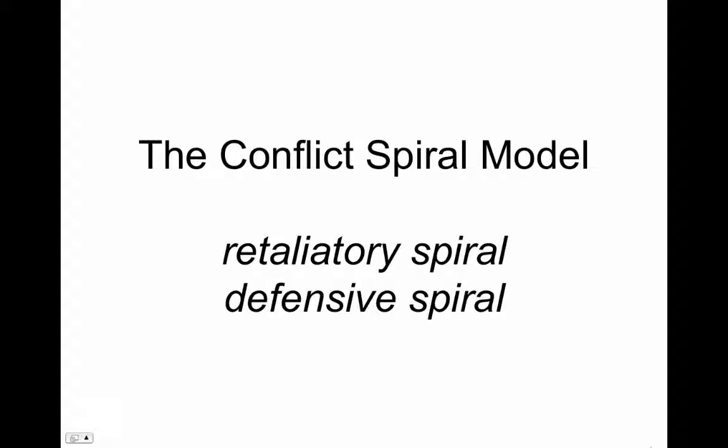Retaliatory spiral is driven by anger and punishing the other, while defensive spiral is driven by fear. In the aggressor-defender analysis, causation flows in only one direction. The aggressor acts and the defender reacts. In the conflict spiral analysis, causation flows in both directions. Each party reacts to the other party's actions.